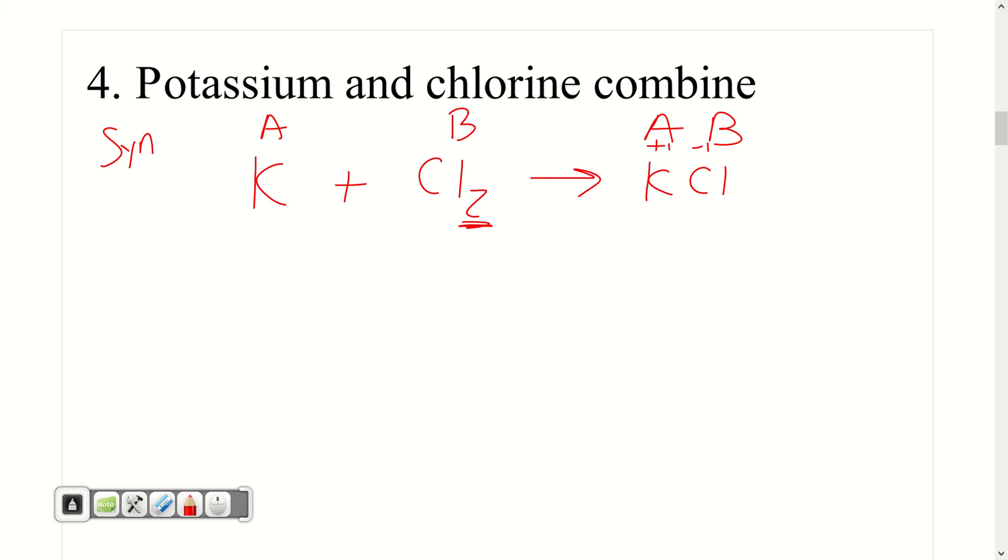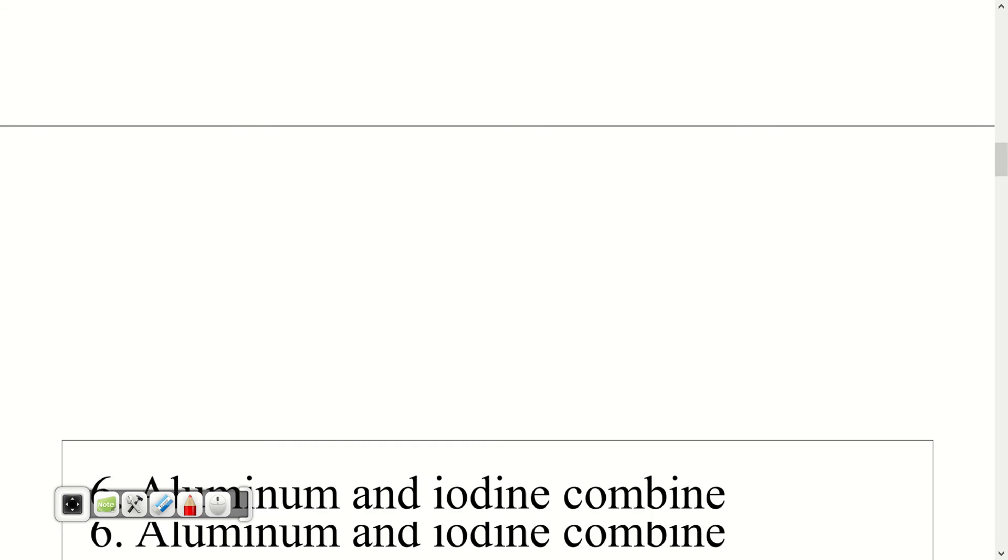But now that I have everything organized, I have my correct predicted product. I can balance. One K, one K, two Cls, one Cl, two there. Now I have two Ks, so put two back over there. And you might be surprised—the balancing part of this might be really simple because we might have some easier compounds we're working with because we're getting through the more difficult part of predicting what there might be. I'm not going to do another synthesis, but you see how that's done.